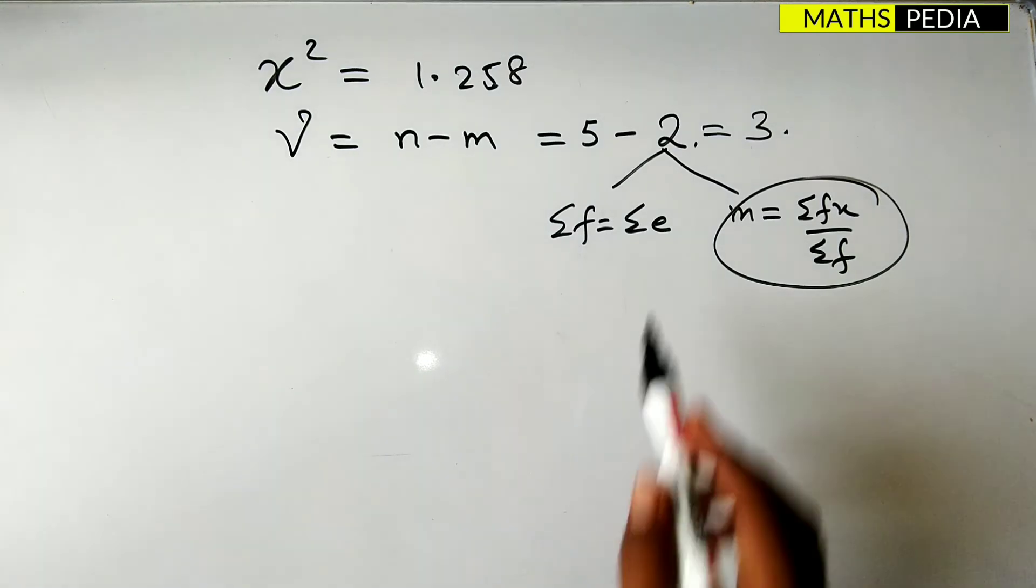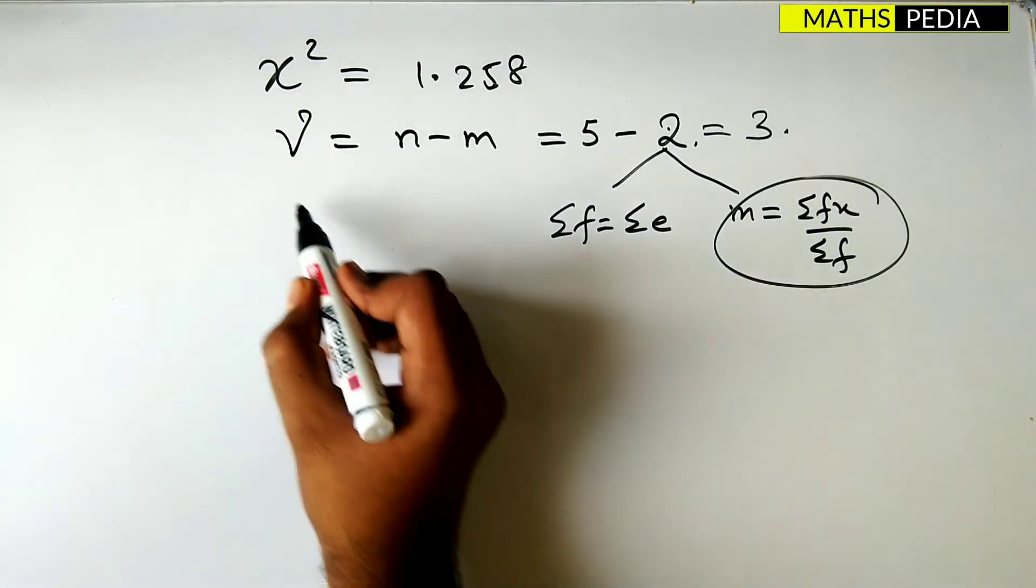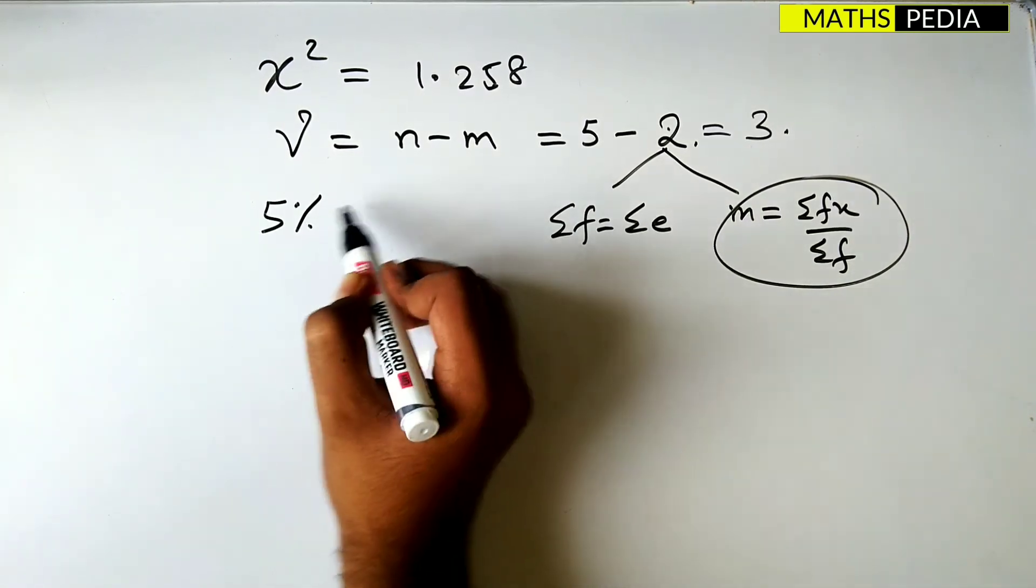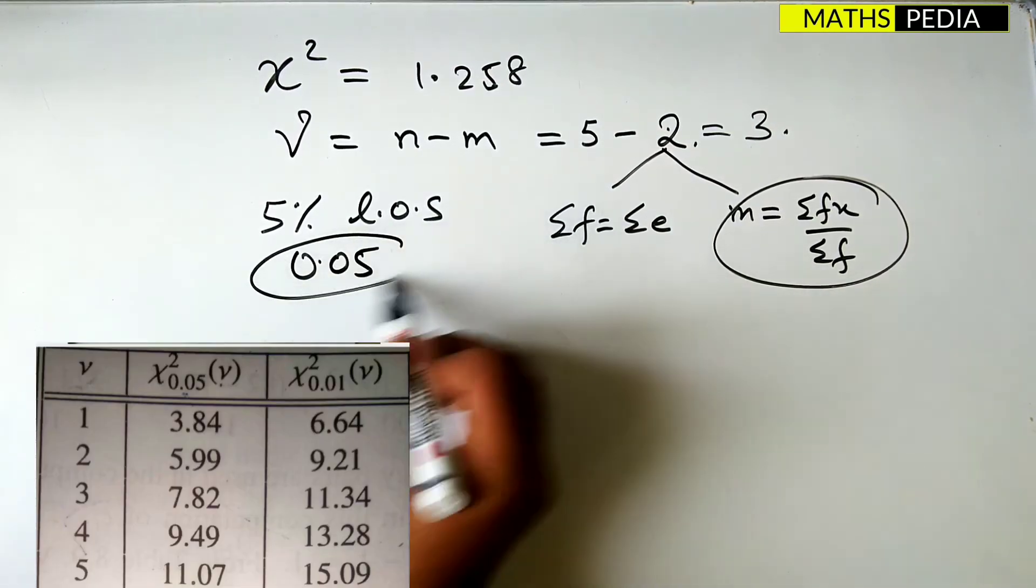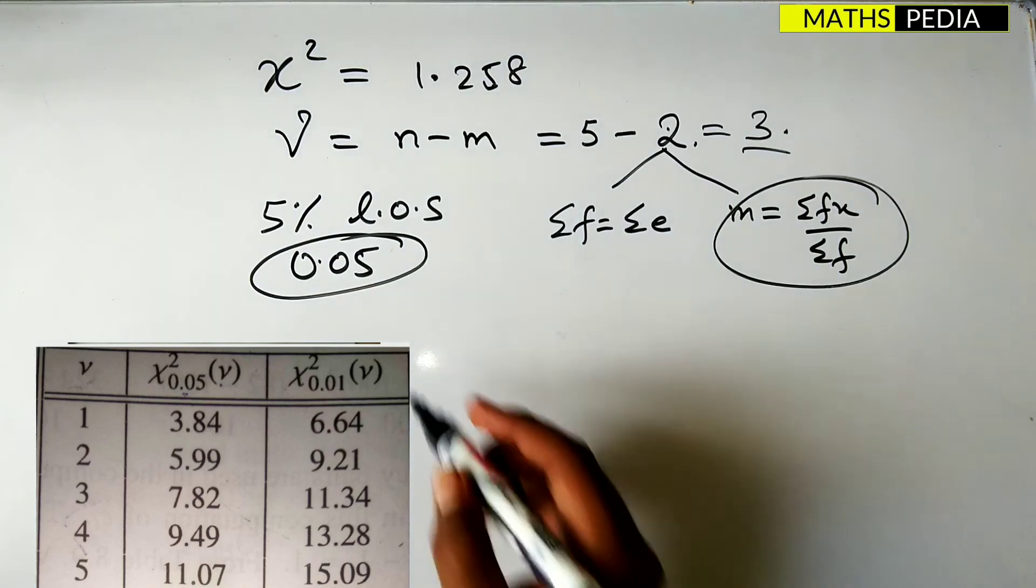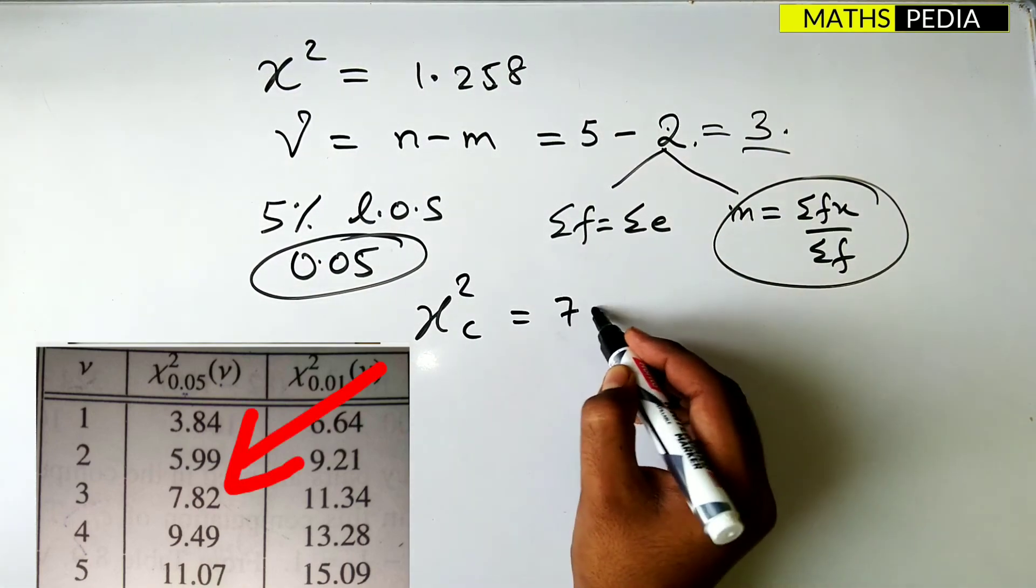Okay? I hope you understood why I have taken 2 here. Now the next thing. Level of significance is also given 5 percentage. 5 percentage level of significance. That means 0.05. So at 0.05 and degree of freedom at 3, we need to find the chi-square from the table which is given as 7.82.